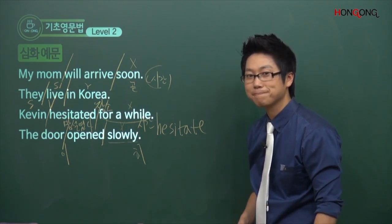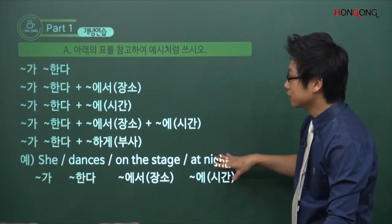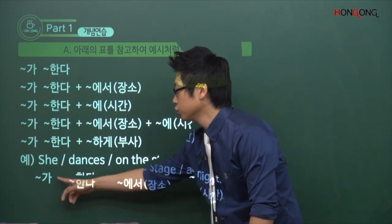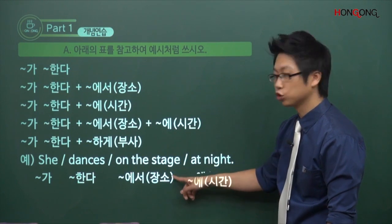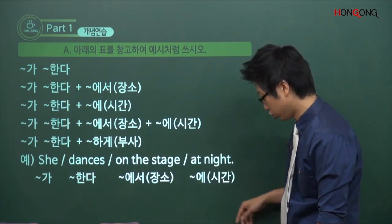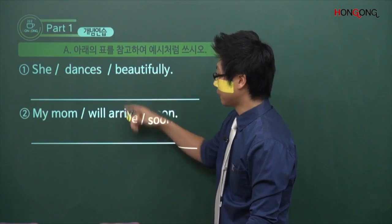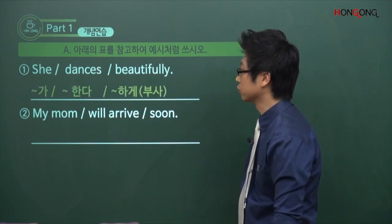자, 문제 풀어보시고 돌아올게요. 네, 돌아왔습니다. A번 개념 연습을 보니까 아까 나왔던 그대로죠. 똑같이 분석시키는 겁니다. She dances. 그녀가 춤춘다. On the stage, 장소죠. At night, 밤에, 시간이죠. 이런 식으로 분석하고 끊어보는 거죠. She dances beautifully, 그녀는 춤춘다, 아름답게. 뭐뭐가 뭐뭐한다, 뭐뭐하게, 이렇게 되는 거죠. 뭐뭐하게 부사.